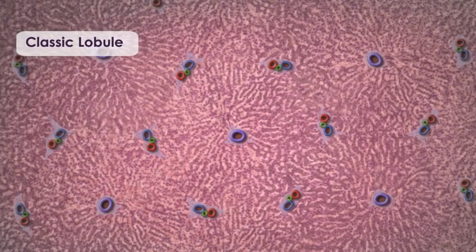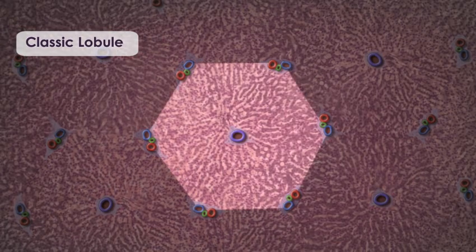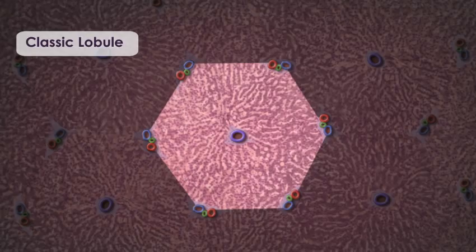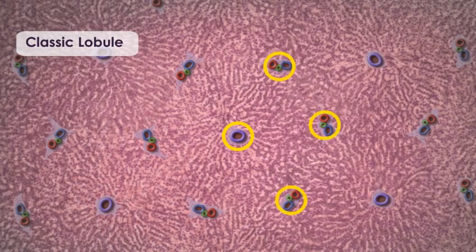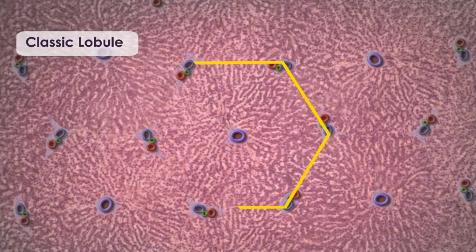The classic liver lobule is based on the structure of the lobule we just discussed. It is hexagonal in shape and is defined by portal triads surrounding a single central vein. To identify a lobule in a histological slide, first find a central vein, next locate the portal triads surrounding that vein, usually about six at the corners of the hexagonal prism. An imaginary line connecting the triads represents the outside border of the lobule.